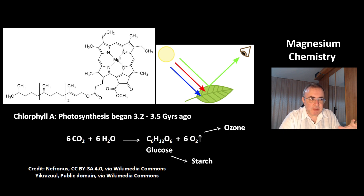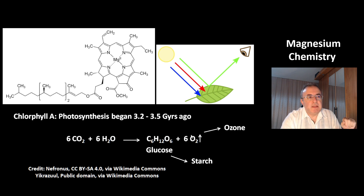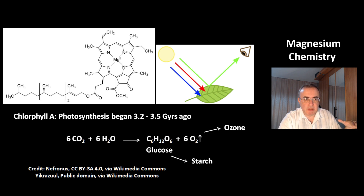Plants can convert excess glucose to the macromolecule starch and store it. The oxygen byproduct was very important because it led to the formation of the ozone layer. And now life was able to get out of the water and conquer land.